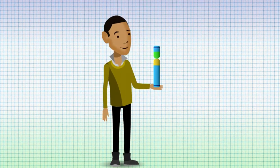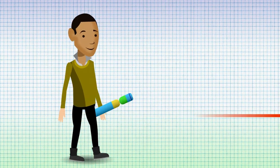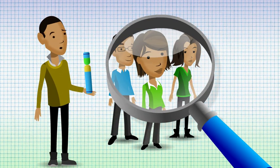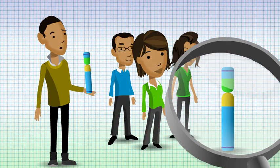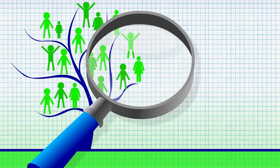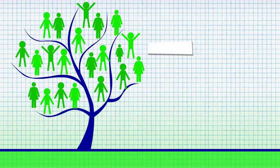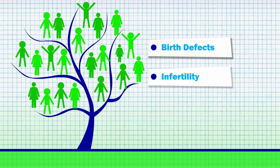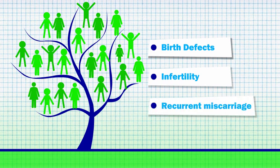Most people who carry pericentric inversions are healthy. Families and family members are identified with pericentric inversions because of investigations following a family history of birth defects, infertility, or recurrent miscarriage.